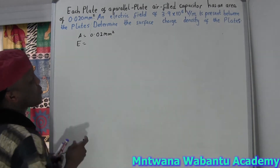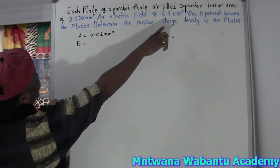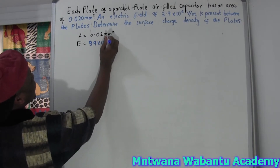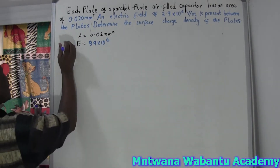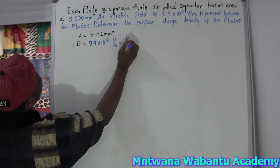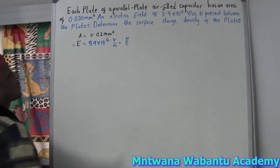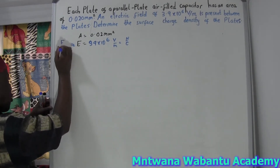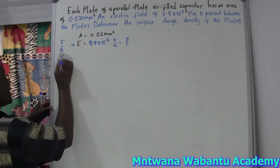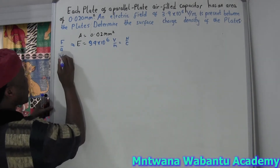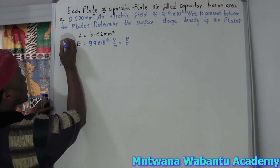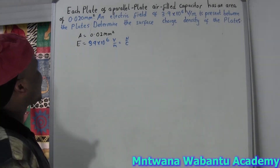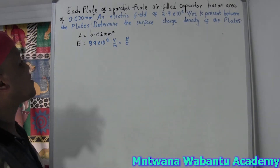The electric field — sometimes it could be newtons per coulomb, or they can say voltage per meter; both are units of electric field. Electric field equals 3.9 times 10 to the power of 6. Electric field has two definitions: force over quantity of charge, or potential difference over distance of separation — that's what gives you volts per meter.